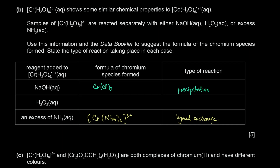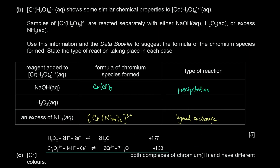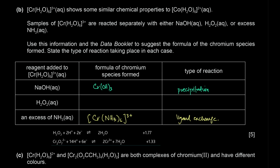With hydrogen peroxide, we look at the data booklet and find two half equations. Hydrogen peroxide is the oxidizing agent — it undergoes reduction (+1.77 V). Cr3+ is the reducing agent — it undergoes oxidation (−1.33 V). The overall EMF is +0.44 V, so this is a spontaneous redox reaction. Cr3+ is oxidized to dichromate, Cr2O7 2−.